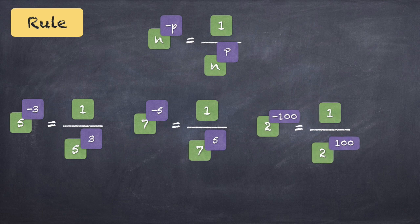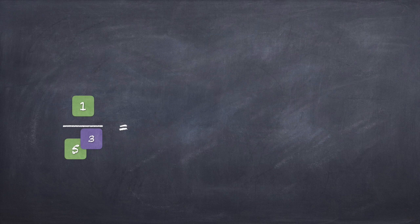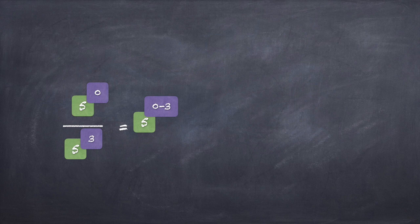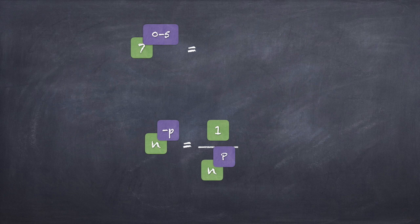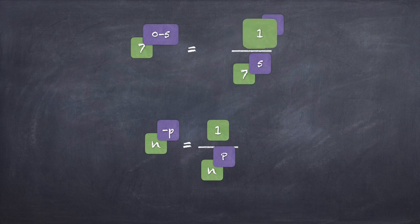Since it is a new idea, let's take a few more examples. 5 raised to minus 3 — what does it mean? It means 1 upon 5 raised to 3. Another way of looking at it: 1 can be rewritten as 5 raised to 0. So rethink it as 5 raised to 0 divided by 5 raised to 3, that means 5 raised to 0 minus 3 using law 2, which means 5 raised to minus 3. For more practice: 7 raised to minus 5 is equal to 1 upon 7 raised to 5. Again, instead of 1 think of it as 7 raised to 0, so 7 raised to 0 divided by 7 raised to 5 gives 7 raised to 0 minus 5, which is 7 raised to minus 5 — the negative index.